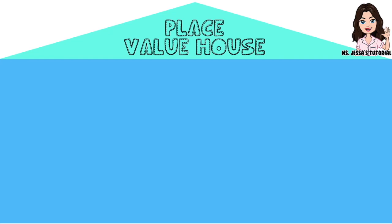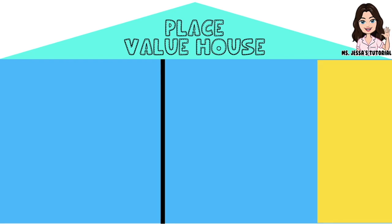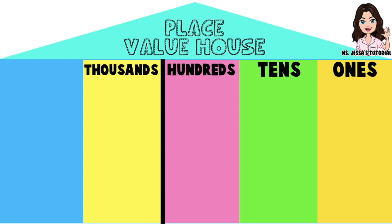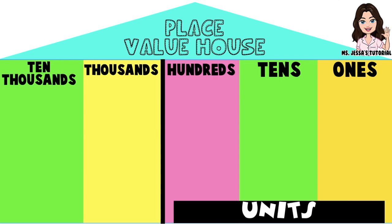I have here the place value house. In the place value house, we have two rooms. In the first room, we have ones place, tens place, and hundreds place. While in the second room, we have thousands place and tens thousands place. The first room is what we call the units period.